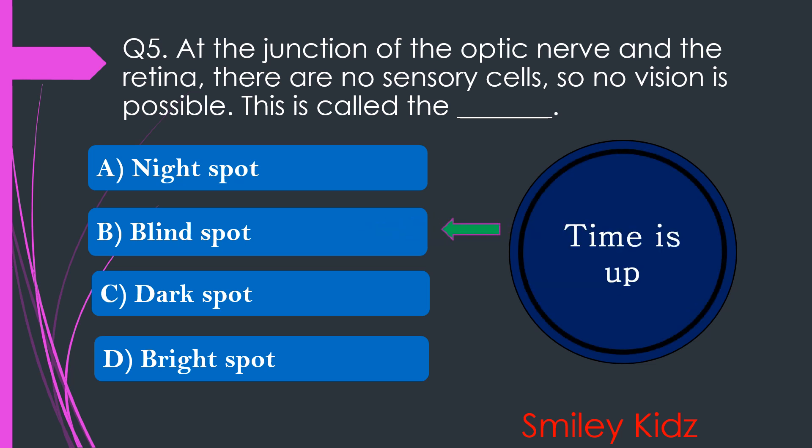Your time is up and the right answer is option B. Blind spot. At the junction of the optic nerve and the retina, there are no sensory cells. So, no vision is possible. This is called the blind spot.